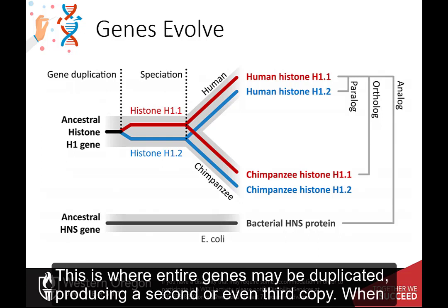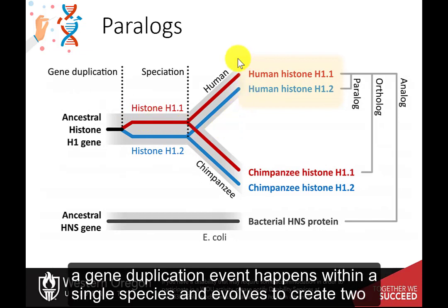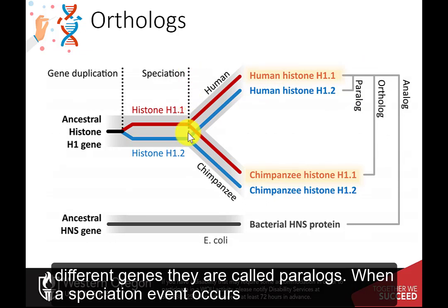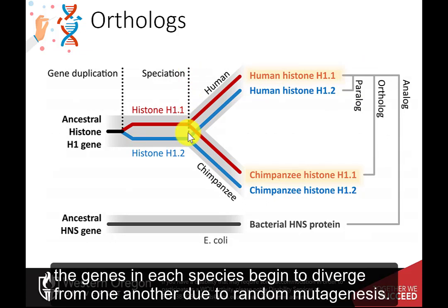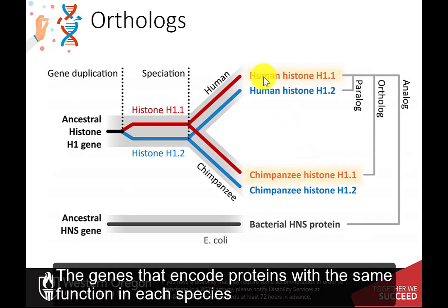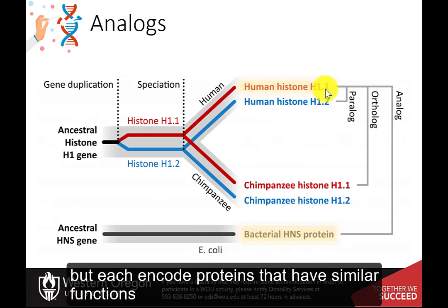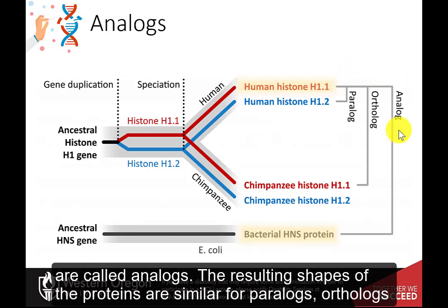Gene duplication is where entire genes may be duplicated, producing a second or even third copy. When a gene duplication event happens within a single species and evolves to create two different genes, they are called paralogs. When a speciation event occurs, the genes in each species begin to diverge from one another due to random mutagenesis. The genes that encode proteins with the same function in each species are called orthologs. Unrelated genes that have separate evolutionary origins but each encode proteins that have similar functions are called analogs.